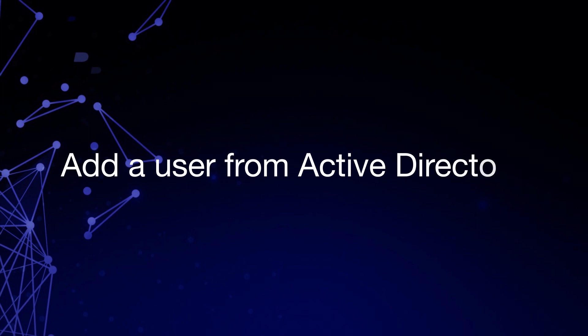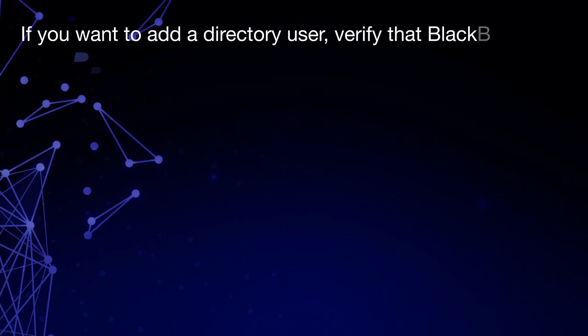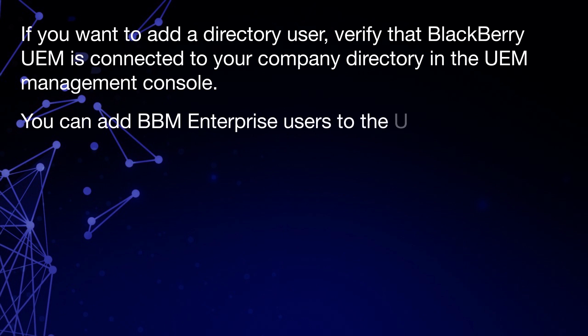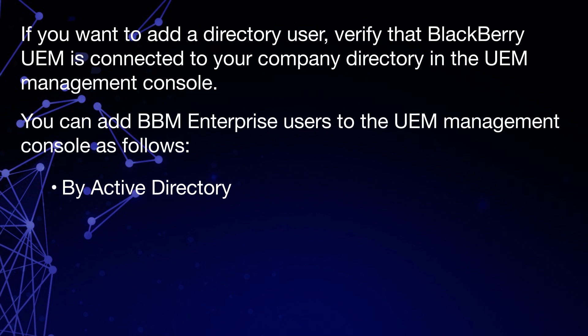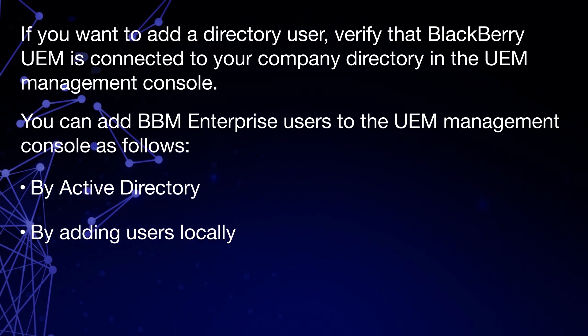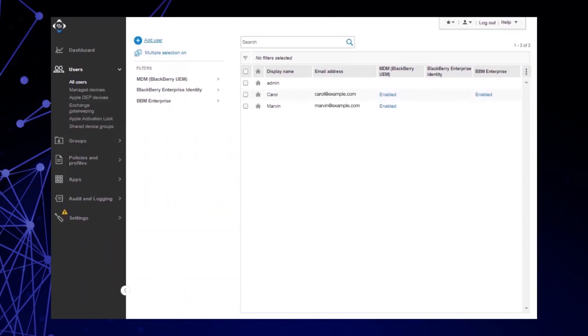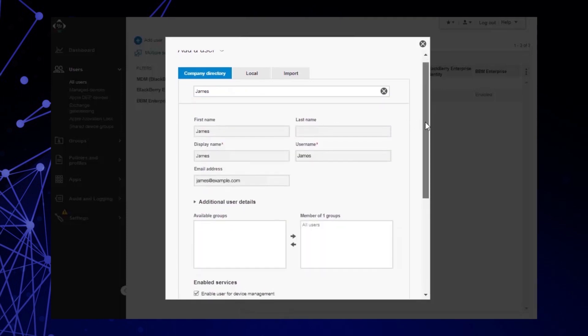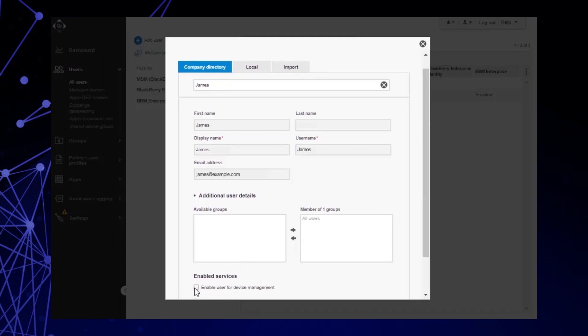If you want to add a directory user, verify that BlackBerry UEM is connected to your company directory in the UEM Management Console. You can add BBM Enterprise users in two ways: using Active Directory or by adding users locally. You can add users locally in bulk using a .csv file. In this demo, we'll add a user from Active Directory. Click Users, then click Add User. On the Company Directory tab, in the search field, type James. In the search results, select James. If the user is not meant to be enabled for MDM, deselect the Enable User for Device Management checkbox. Click Save.